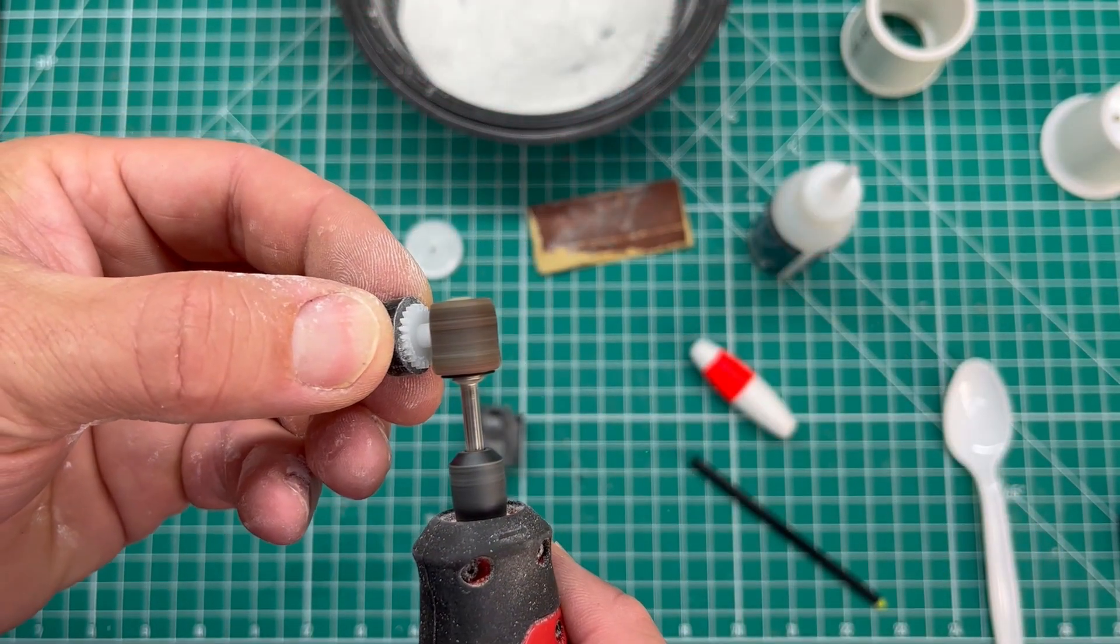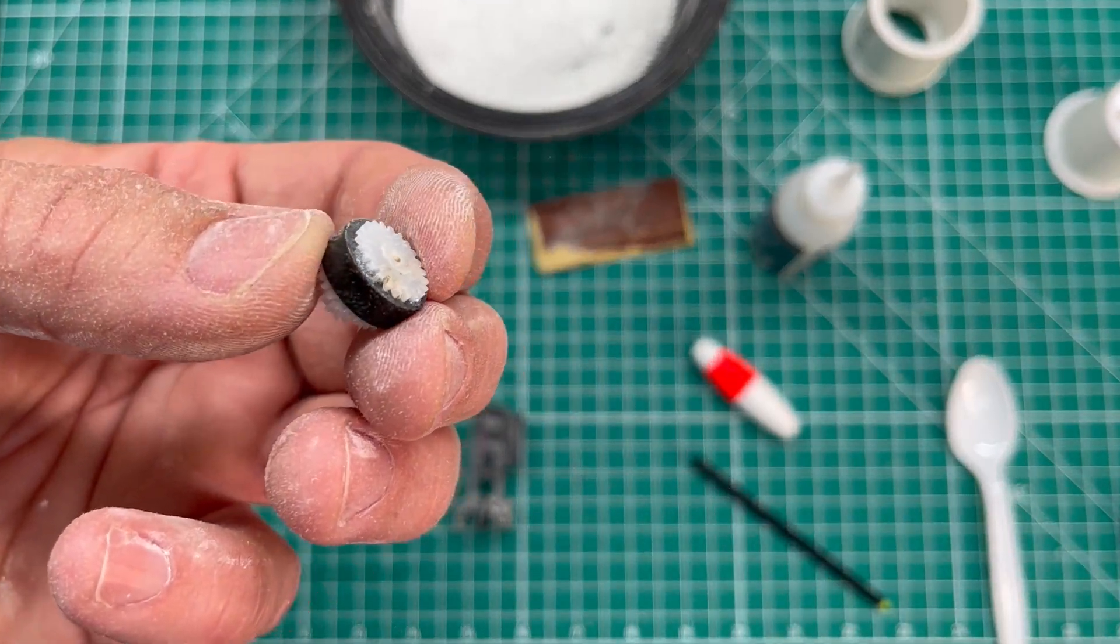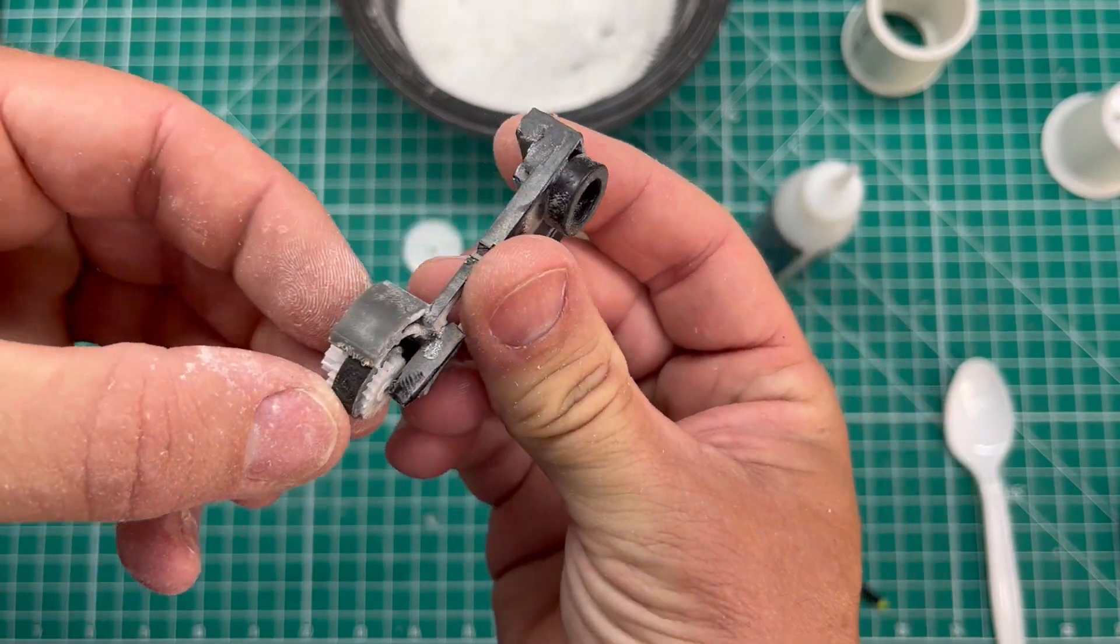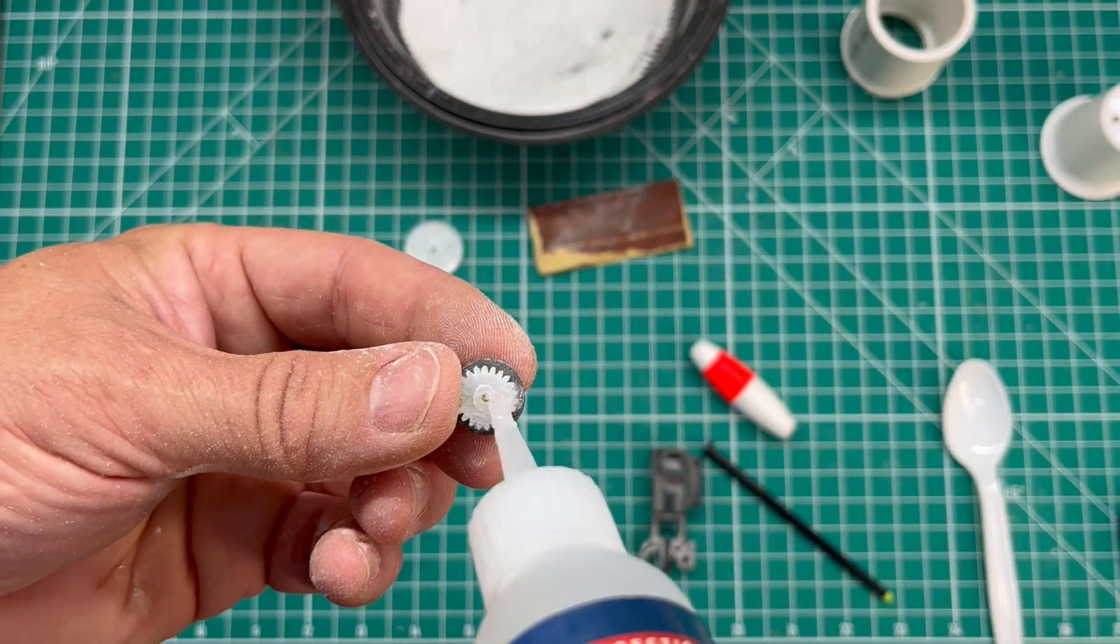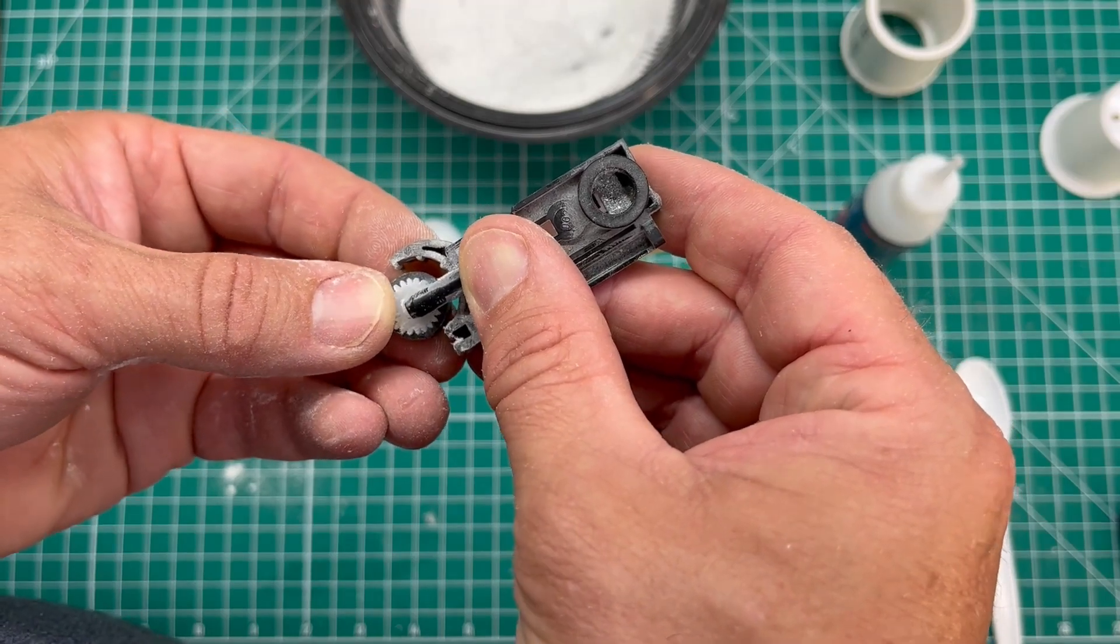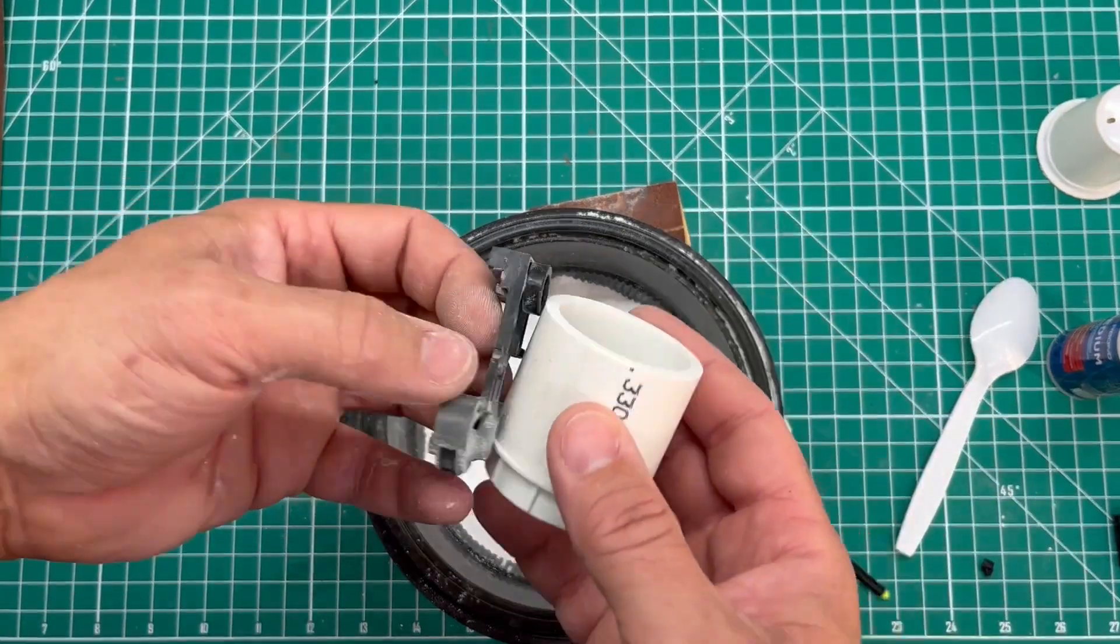I glue those together with some super glue. And then I shaved off the center hub of one of those gears. And this is just so that it'll fit up nicely against that plastic tube. Once I like the fit then I go ahead and add some glue. Glue that in place. And we're looking pretty good.